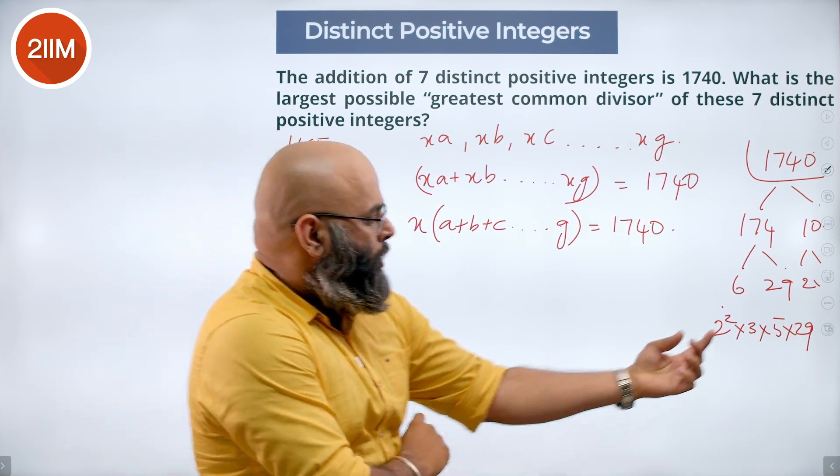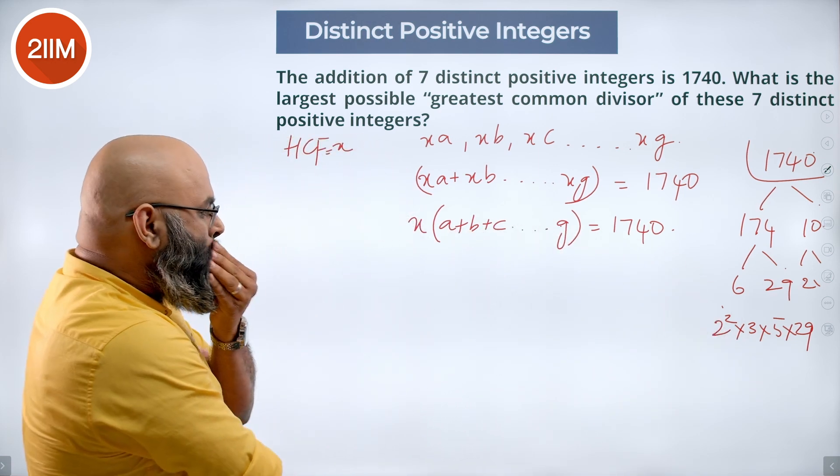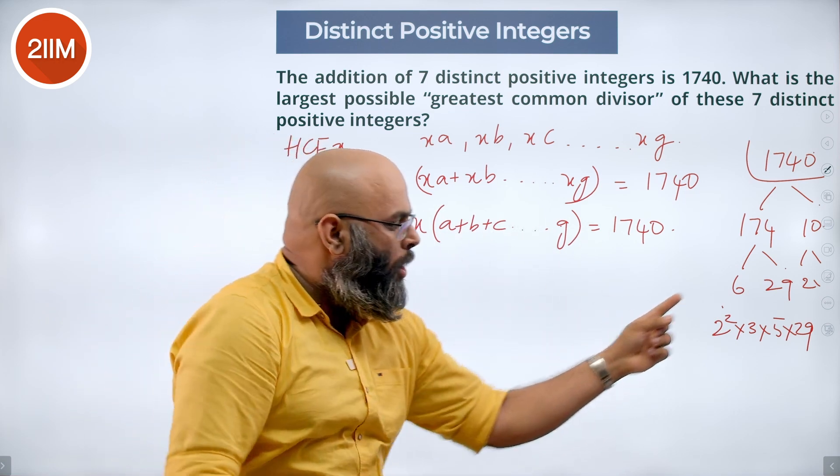So some particular combination here we take, we get it. Now looking at this case here, X into something gives me 1740. So X has to be some combination of that.